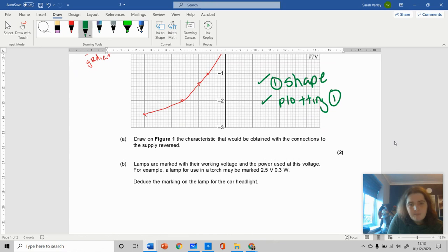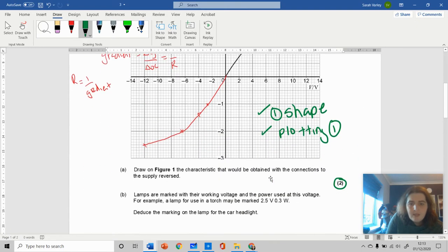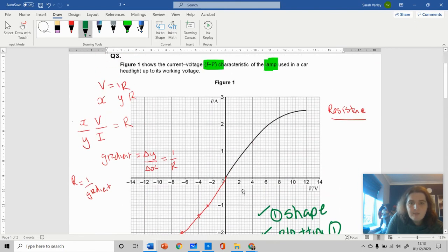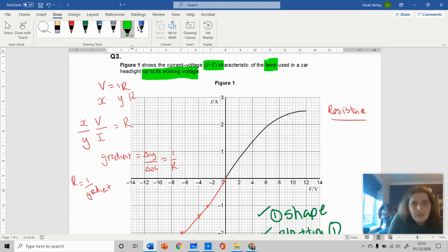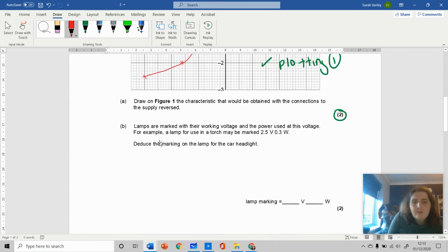Always double check. If you see a point here, that means there is a question. Lamps are marked with working voltage and power. Deduce the marking of the lamp for this headlight. This is where there's information - it goes up to its working voltage, which in this case was 12 volts.